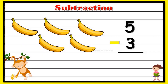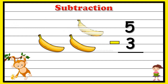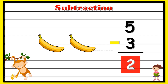Now let's check out the remaining balance. We start counting the objects — one, two, three — from five bananas we have subtracted three bananas. Now let's count the remaining ones: one, two. So five minus three gives you the value two. We have two bananas remaining.